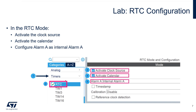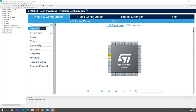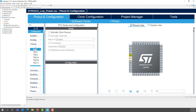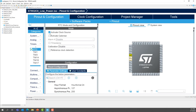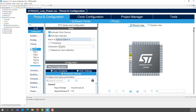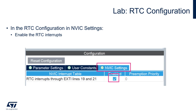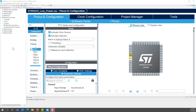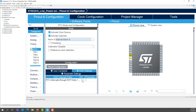We will start by configuring the RTC clock source, then activate the calendar, and select Alarm A as the internal alarm — which will be the wake-up source from stop mode. From the Pinout and Configuration tab, select Timers > RTC, activate the clock source, activate the calendar, and select internal Alarm A. We'll also enable the RTC interrupt, since we enter stop mode using WFI (wait for interrupt). Go to NVIC Settings and enable the interrupt.